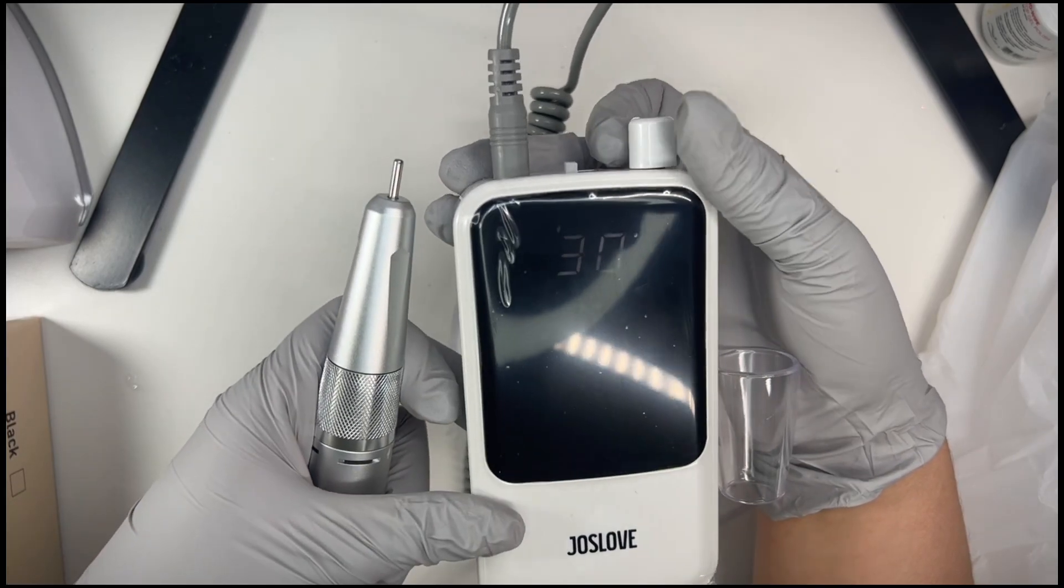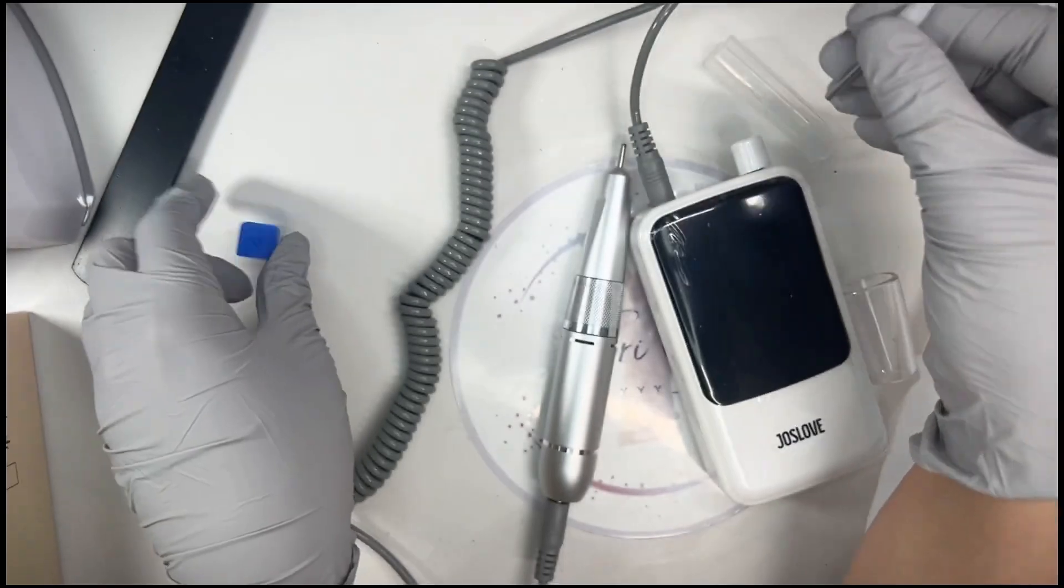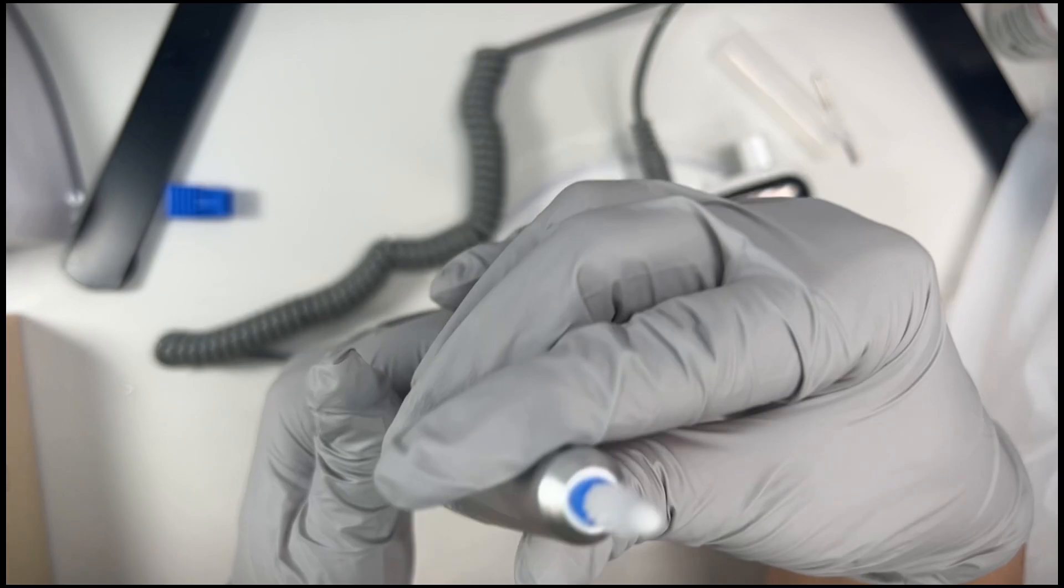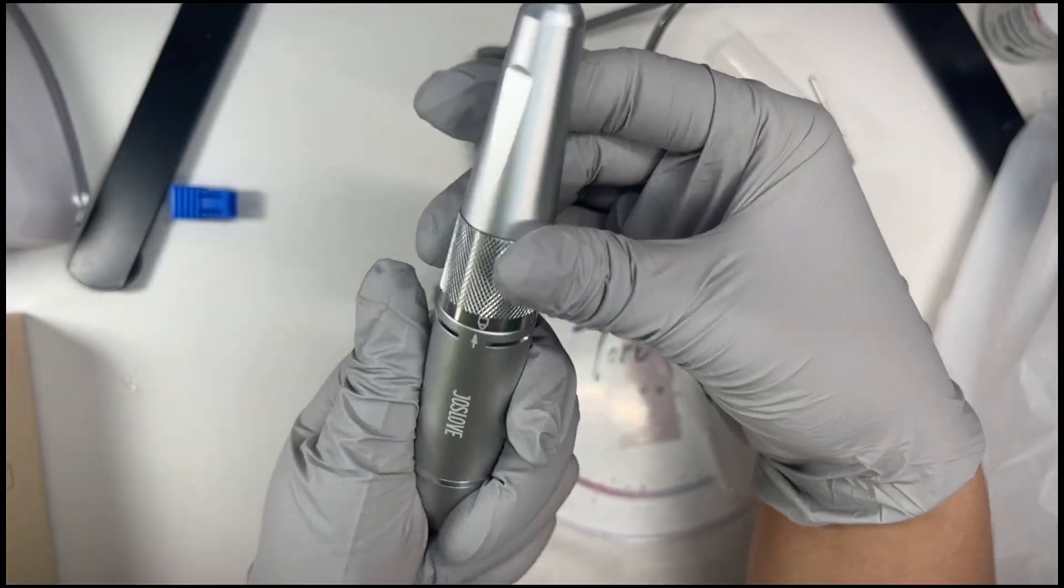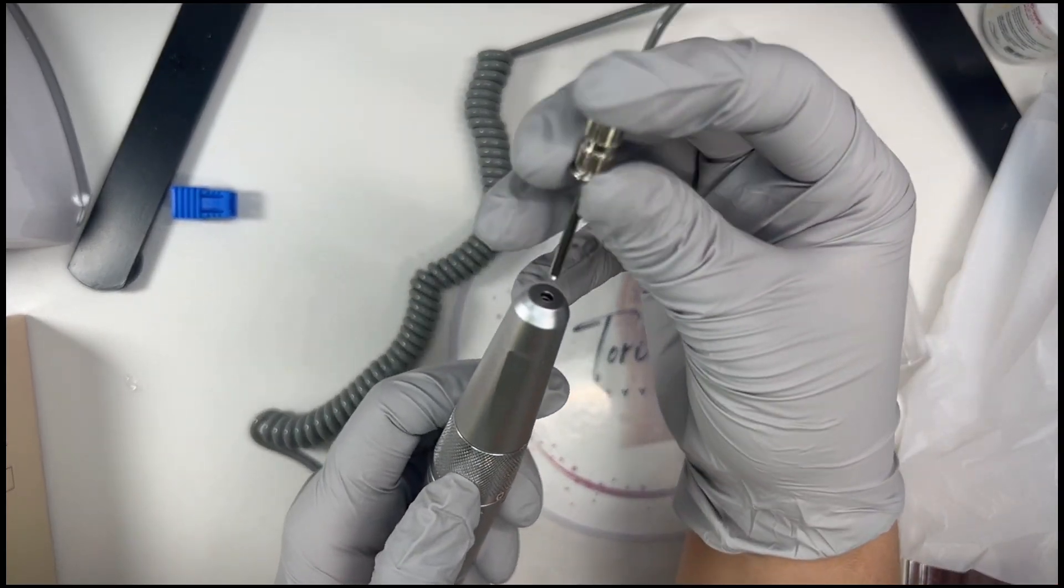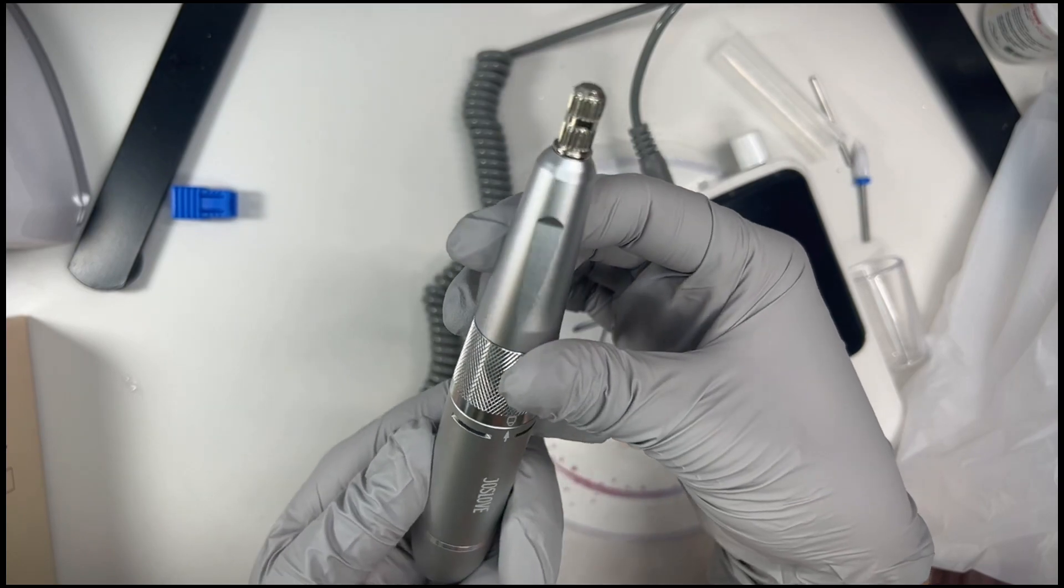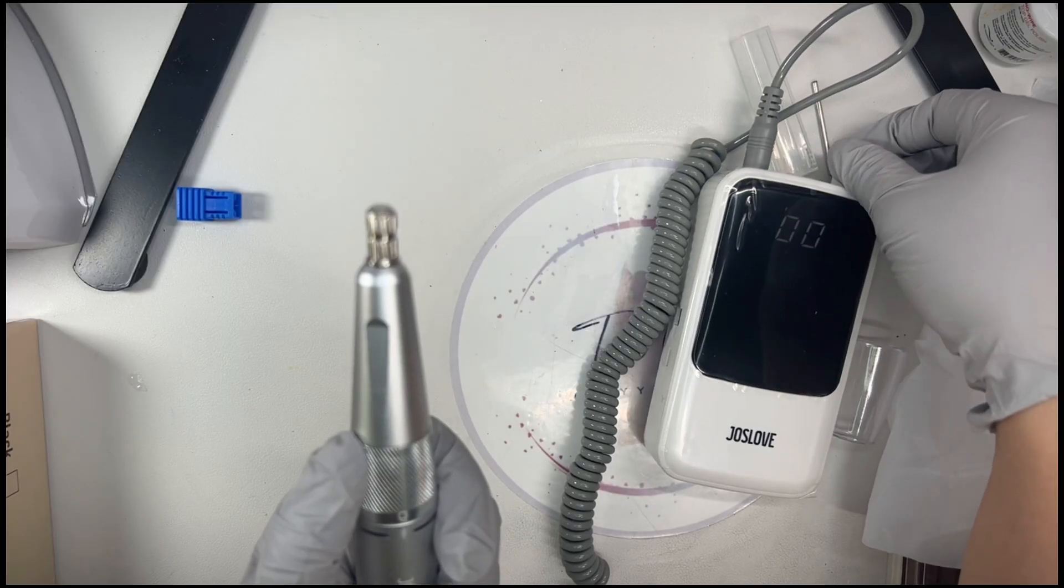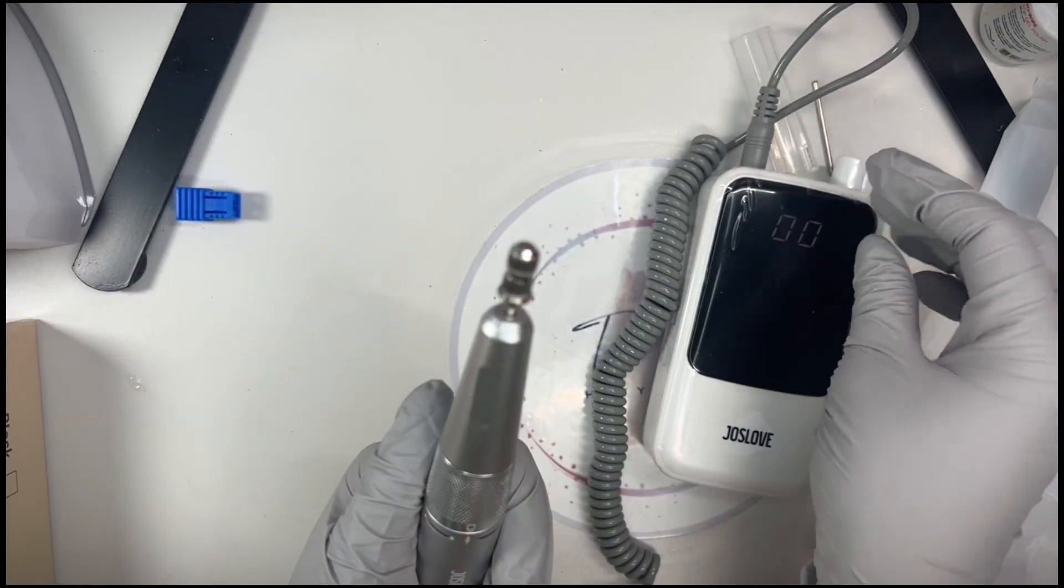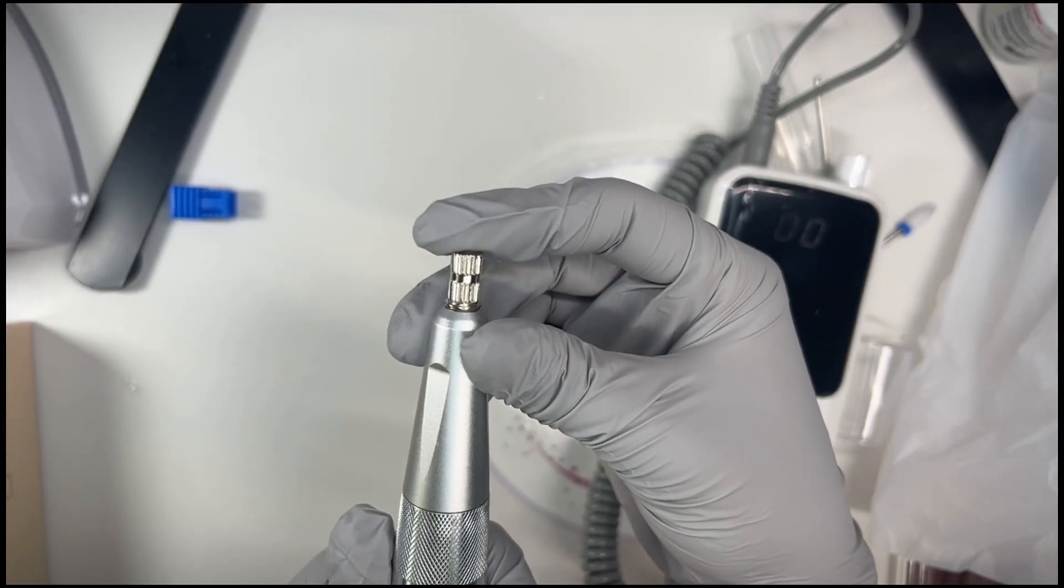When it came to inserting the drill bits, I found this a little bit weird that when you put them inside of the component it goes all the way down, and that doesn't happen with my other drill. As you can see here, it literally went all the way down and only some of them did that, so I think it just depends on the length of the drill bit. But in order to use it efficiently, I just lifted it up a little bit that way I can get the bit to sit flush on my nail instead of having it at an angle.